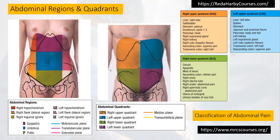For the right lower quadrant, we have the cecum and adjacent appendix — think about appendicitis. Also consider terminal ileitis in Crohn's disease, ascending colon, and if there is a mass, think about right colonic tumors. Consider the right ureter if you have ureteric colic in this region, the spermatic cord, the uterus if female, or the urinary bladder if very full.